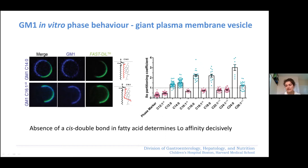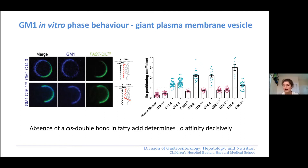Looking at all of the GM1 species we generated, in vitro it seems that the presence or absence of a cis double bond decisively determines the phase preference. For example, GM1 C12:1, which has a cis double bond, prefers the liquid disordered phase. But GM1 C12:0, saturated, prefers the liquid ordered phase — and this holds irrespective of the chain length.